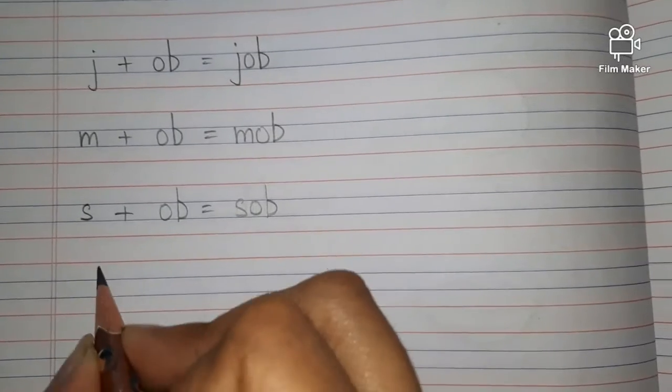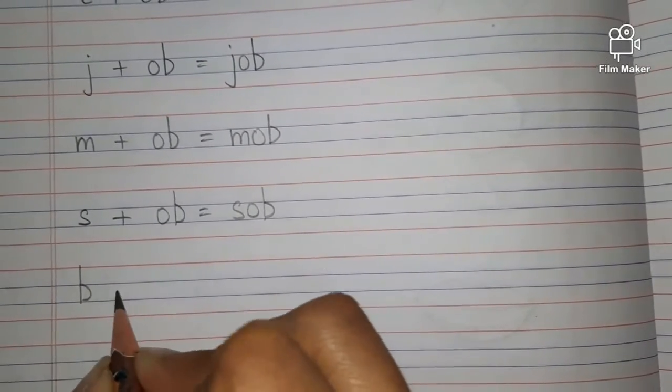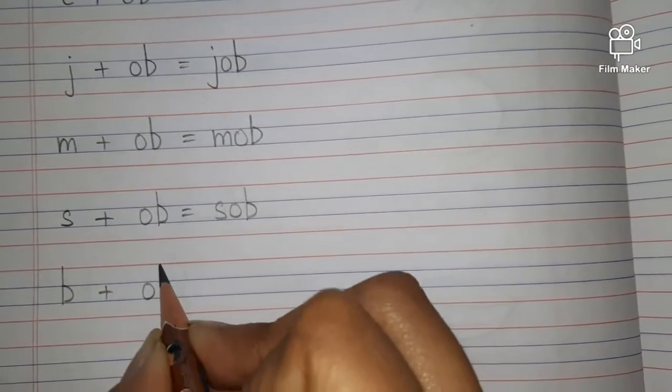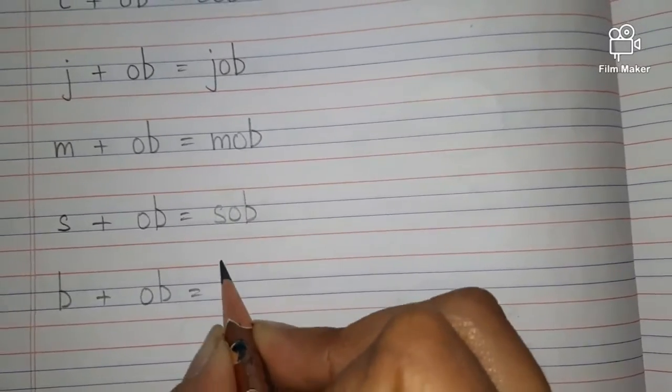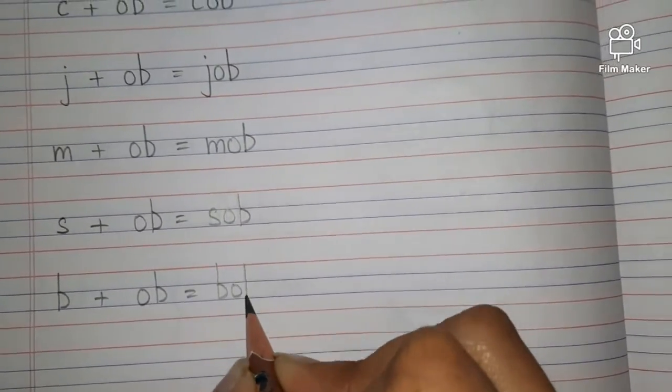Next is BOB. B plus OB. What word will be formed? BOB. So this is how you are going to write down all the OB sound words.